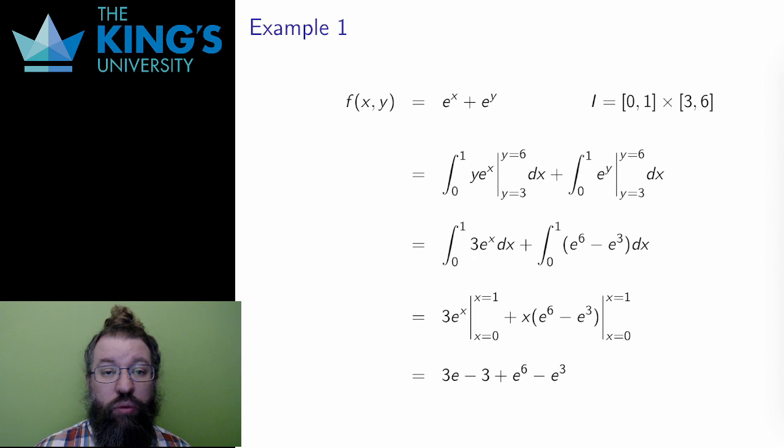Then I do the evaluations. y at 6 minus y at 3 just leaves 3 in the first part, and in the second I get e to the 6 minus e to the 3.